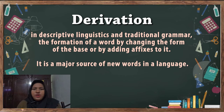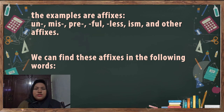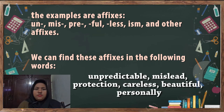And the last word formation is derivation. Derivation, in descriptive linguistics and traditional grammar, is the formation of a word by changing the form of the base or by adding affixes to it. It is a major source of new words in a language. The examples of affixes are: un-, mis-, -tion, -less, -ism, and other affixes. We can find these affixes in words such as unpredictable, mislead, protection, careless, beautiful, personally, and so on.